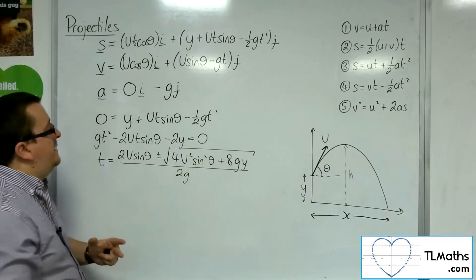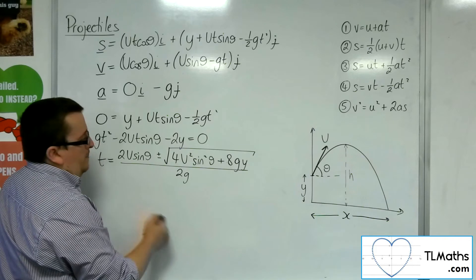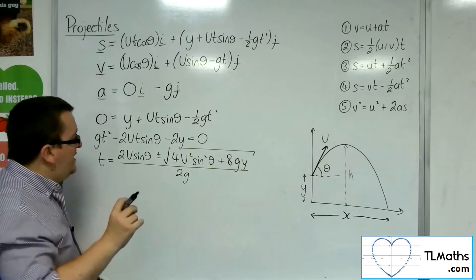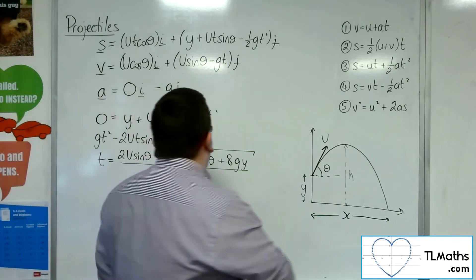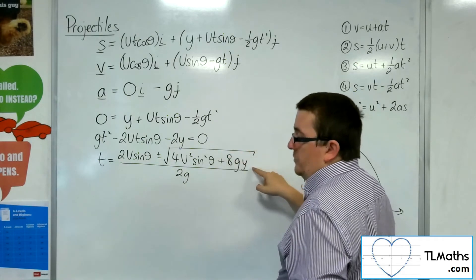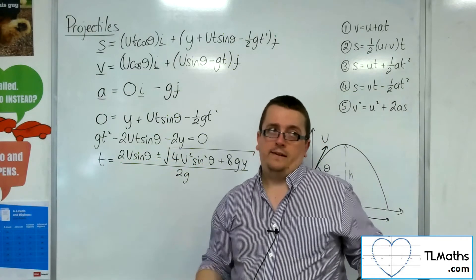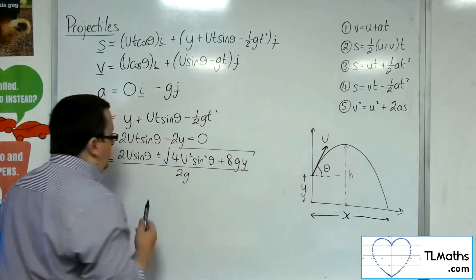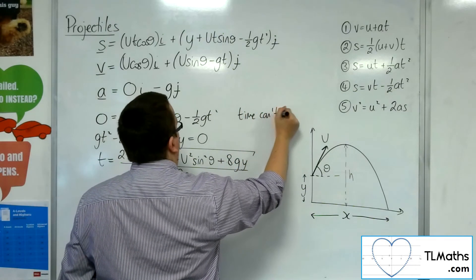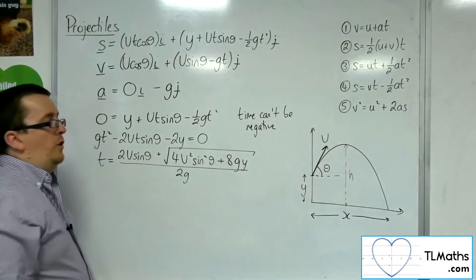Now, because time can't be negative, the negative solution here can be discounted, because the square root of 4u squared sine squared theta plus 8gy will be greater than 2u sine theta — because that is 2u sine theta when square rooted. So if I add more to it, it becomes larger. So 2u sine theta minus something larger than itself gives a negative result — a negative time. So we can discount the negative time, and we've got to have plus there.